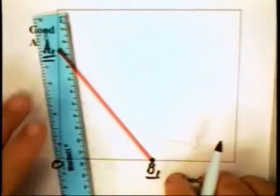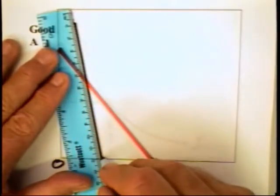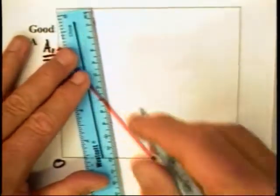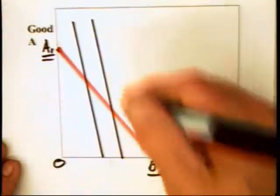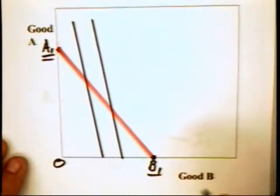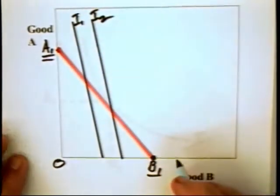Now, we can have downward sloping indifference curves that look like this. But would we expect them to look like straight lines cutting the curve in this direction? This can be I1 and this can be I2.